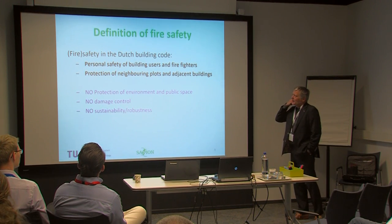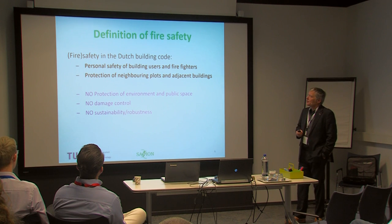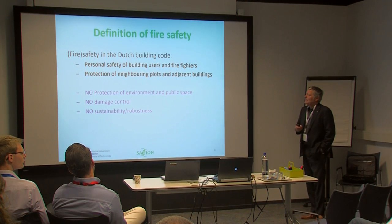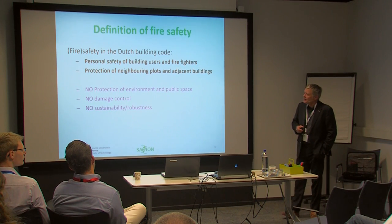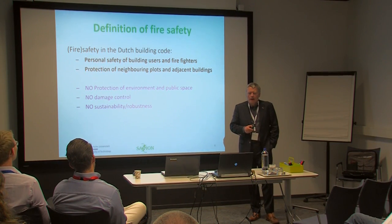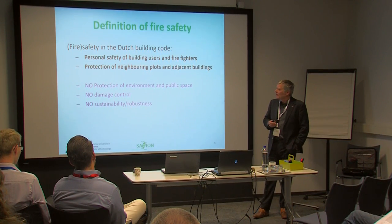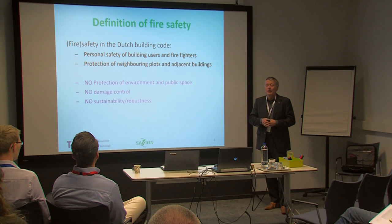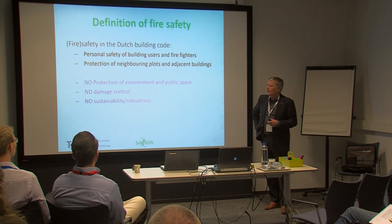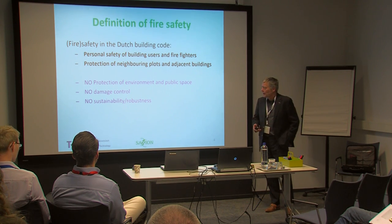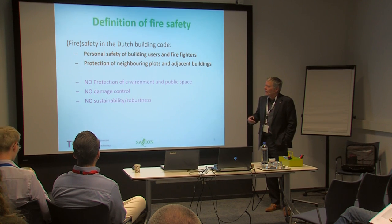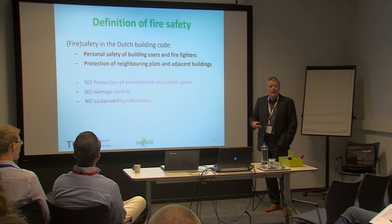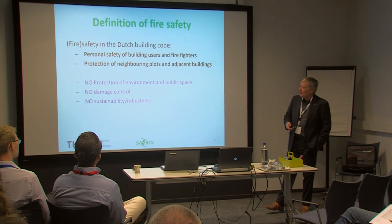Fire safety in the Dutch building code consists of a lot of practical rules and regulations, like maximum size of a fire compartment and maximum walking distances. They serve two main objectives: personal safety of building users and firefighters, and protection of neighboring plots. There is no damage control in the building code. That's where the Saxion students' case comes in — it makes sense to do something about damage control, especially for resilient buildings regarding sustainability and robustness. These are private objectives not in the building code; you have to formulate them yourself.